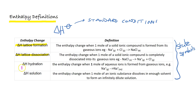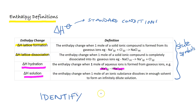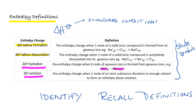Our two new calculations in this session are Enthalpy of Hydration and Enthalpy of Solution. The enthalpy change of hydration is the enthalpy change when one mole of aqueous ions is formed from gaseous ions — for example, Na⁺(g) → Na⁺(aq). Enthalpy of Solution is the enthalpy change when one mole of an ionic substance dissolves in enough solvent to form an infinitely dilute solution. You need to be able to identify these reactions, recall their definitions, and most likely in the exam do calculations with them.